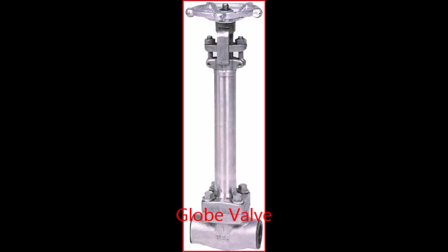It consists of a movable disc type element and a stationary ring seat in a generally spherical body. Globe valves are named for their spherical body shape with the two halves of the body being separated by an internal baffle. This has an opening that forms a seat onto which a movable plug can be screwed in to close or shut the valve.